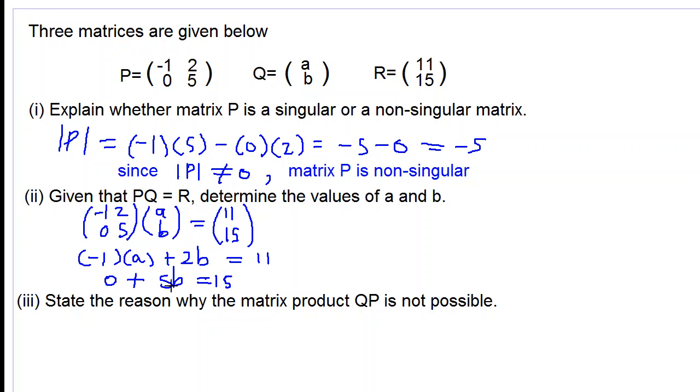So we have two equations here. From equation 2, 5b is equal to 15. So therefore b is equal to 15 divided by 5. 5 into 15 is 3.